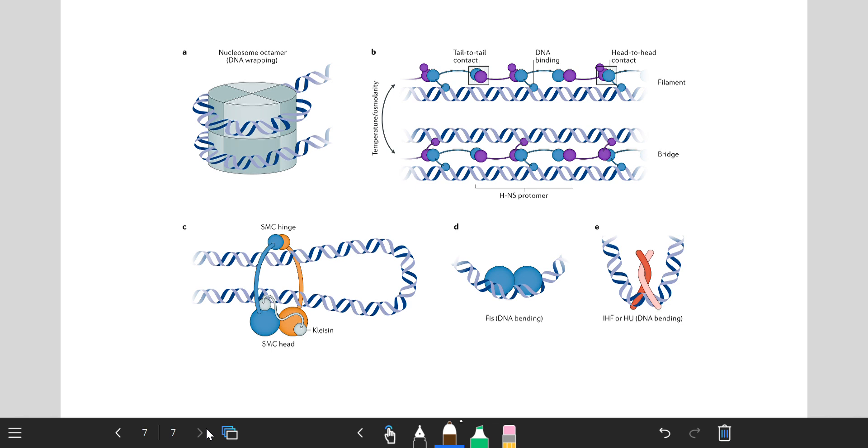This picture represents the four kinds of protein interactions. The first picture shows normal eukaryotic chromosomal folding. The second picture represents how HNS participates in the formation of DNA loops by changing temperature and osmolarity. The third picture represents structural maintenance of chromosomes by forming SMC complex - structural maintenance chromosomal complexes.